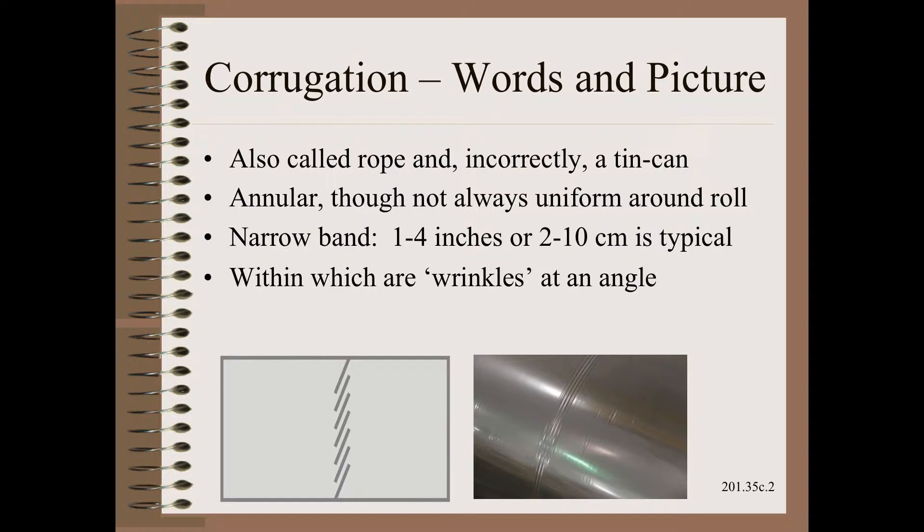We could describe the corrugation in words as a narrow annular band within which you will see characteristic faint wrinkles at an angle. We saw in Module 9 of my Web 101 that the angle indicates something is crooked. We will get to crookedness in the next slide. However, instead of words, we offer a schematic of the defect that is so common that it is found in paper, film, foil, non-woven, textiles, tissue, and many other materials.